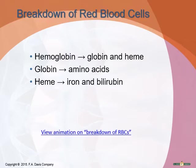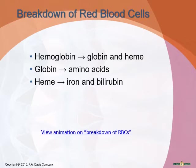Red blood cells live for about 120 days. As they get older, the membrane weakens and the cell makes its way to the liver and spleen, where macrophages ingest and destroy them. The heme and globin are separated: globin breaks down into amino acids recycled to create new proteins, while heme breaks down into iron and bilirubin. Iron is recycled to produce new red blood cells, and bilirubin is excreted in feces and urine.